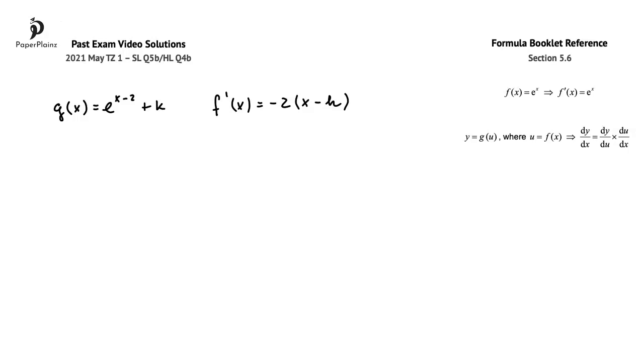We already have the derivative of f(x) from the previous question part, so in our first step we'll find the derivative of g(x). Based on this rule from section 5.6 of the formula booklet, we get that the derivative of e to the power of x minus 2 is simply e to the power of x minus 2.